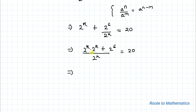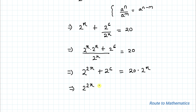Since the bases are the same, by applying the exponential rule the powers can be added. So 2 to the power x times 2 to the power x becomes 2 to the power 2x. Our equation is now: 2 to the power 2x plus 2 to the power 6 equals 20 multiplied by 2 to the power x.